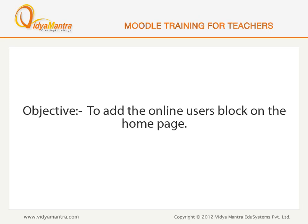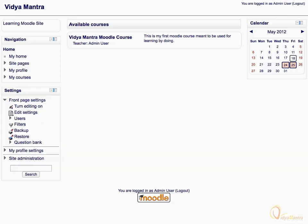In this lesson, we will learn to add the online users block on the home page. The online users block can be used to show a list of online users at any given time. Let's add the online users block to the course main page.